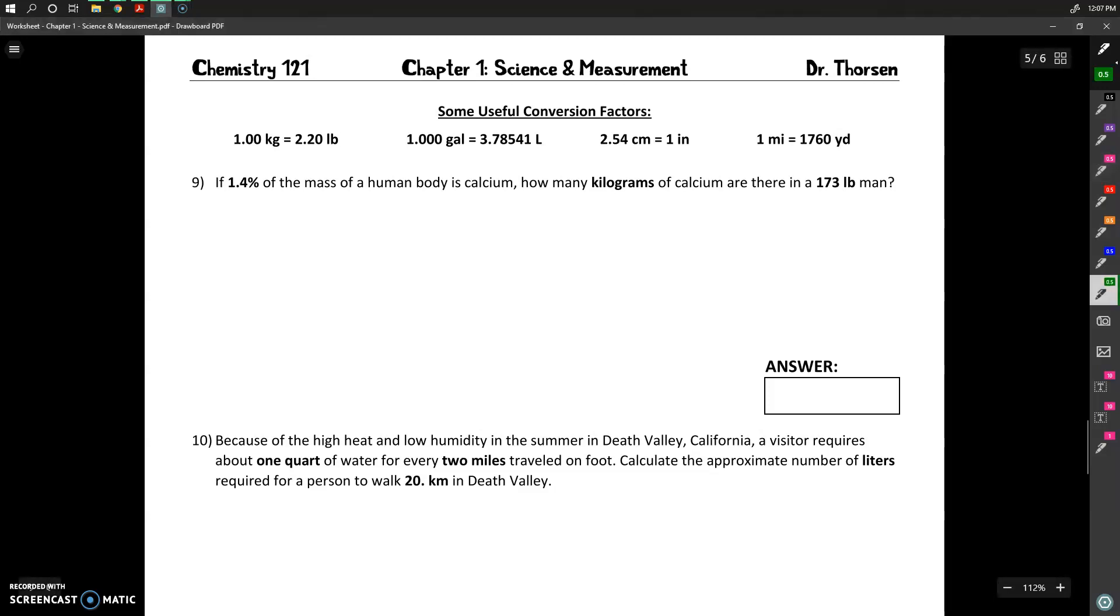So for this problem here, let's note here that we've got 1.4% of the mass of a human body is calcium. How many kilograms of calcium are there in a 173-pound man?